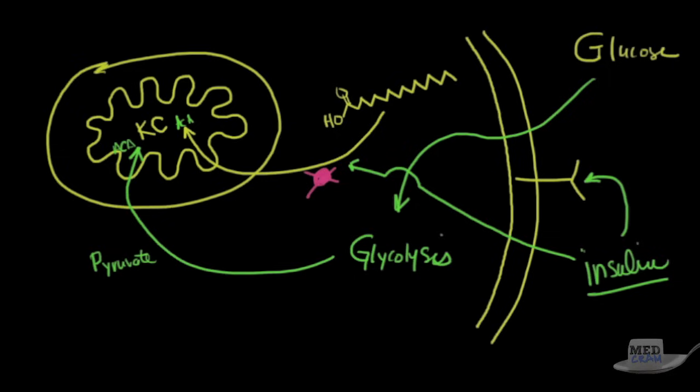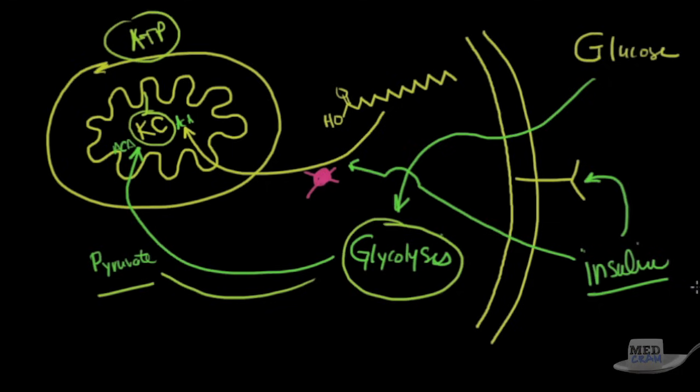So in the normal situation, what you have is insulin hitting a receptor, causing glucose to go into the cell. Glycolysis is occurring, which the end result is pyruvate. Pyruvate then moves into the mitochondria. Krebs cycle occurs, and you get ATP. Great.